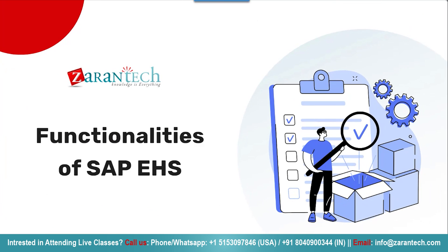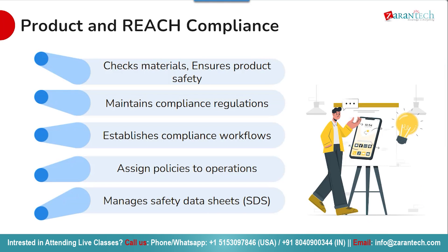Now looking at key functionalities, starting with Product Compliance: SAP EHS has a powerful Product Compliance feature that allows you to verify if your products comply with regulatory and safety policies. The software utilizes formal workflows and approvals to ensure products meet required standards. You can assign specific compliance policies to individual products and operations. It also includes authoring and distributing capabilities to create and distribute safety data sheets that communicate potential hazards and safety handling instructions to customers.